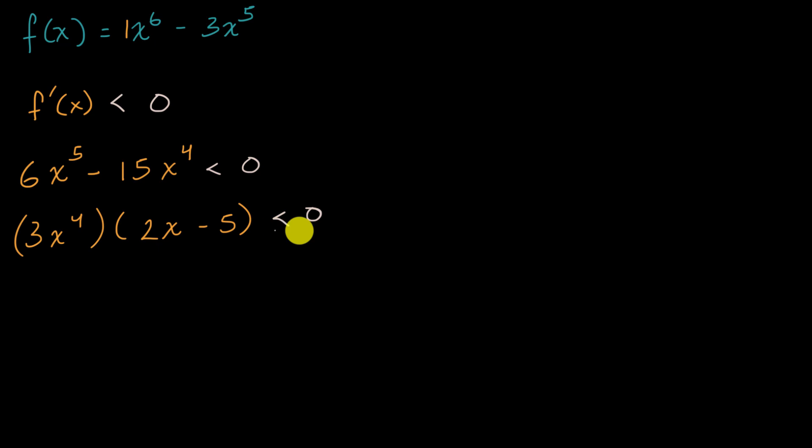Any interval where this is true, we are going to be decreasing. Now, how do we get this to be less than zero? Well, if I take the product of two things and it's less than zero, that means that they have to have different signs. Either one's positive and the other's negative, or one's negative and the other's positive.